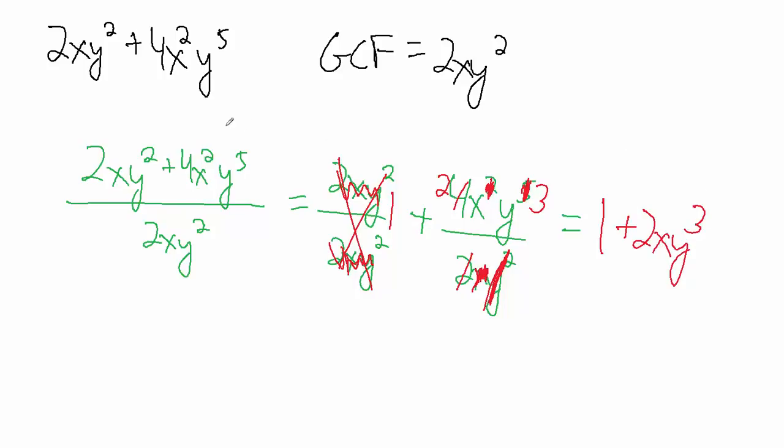So what we just found out was when we take 2xy squared plus 4x squared y to the fifth and divide or factor out a 2xy squared, our greatest common factor, what we're left with is 1 plus 2xy cubed.